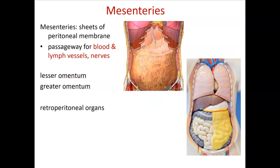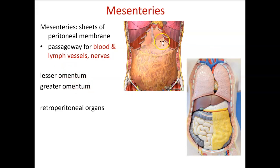Mesenteries are fatty connective tissue that help hold everything together — they're passageways for blood, nerves, and lymph. There are two special ones called the lesser and greater omentum — omentum is Latin for apron. The lesser omentum connects and supports the liver to the stomach. The greater omentum is the really big one connecting the stomach to the large and small intestines. Retroperitoneal organs are technically behind the peritoneal cavity — the best example is the kidneys.